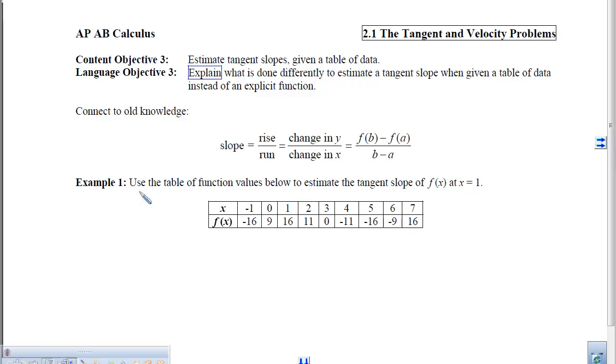However, with this content objective, we do not get the function. That means we are limited by the constraints of the data alone. Here, if we look at example 1, it says we want to use the table to estimate the tangent slope at 1.